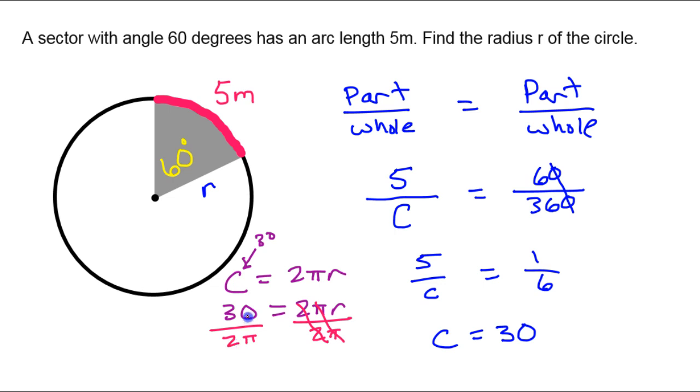Okay, so 2 goes into 30, 15 times. So this is 15 over π. That's the exact answer for the radius. The radius is 15 over π meters.